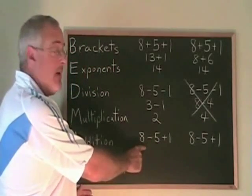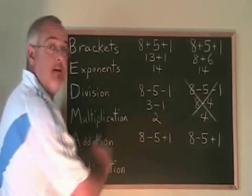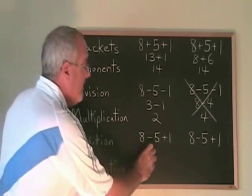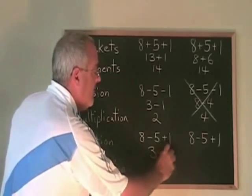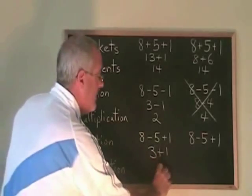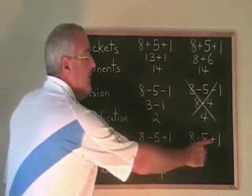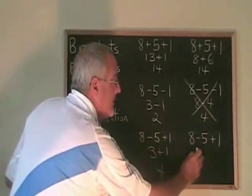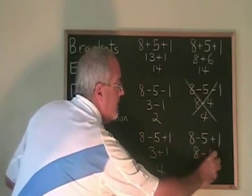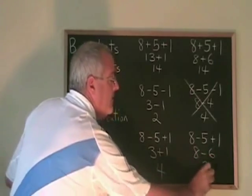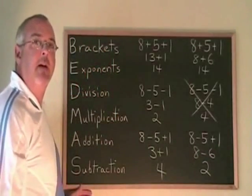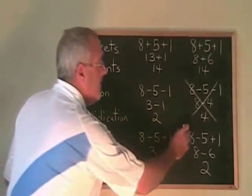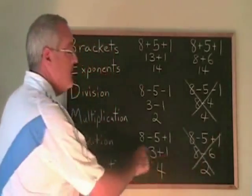Now let's look at a third example where we have a mixture of minus and plus. If we do the minus first, 8 minus 5 is 3, and 3 plus 1 is 4. If we do the plus first, 5 plus 1 is 6, so we get 8 minus 6, which is 2. The answers are different again. The minus sign is causing problems. The first approach is the right answer, and the second is wrong.